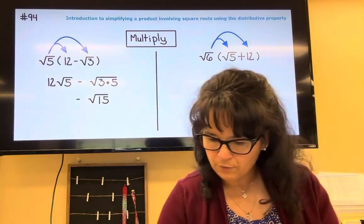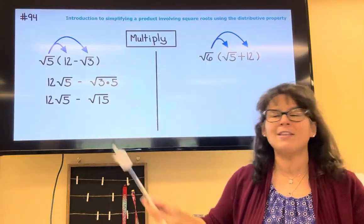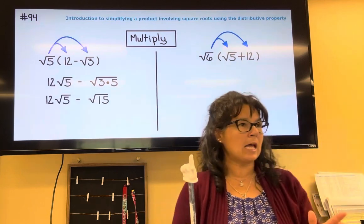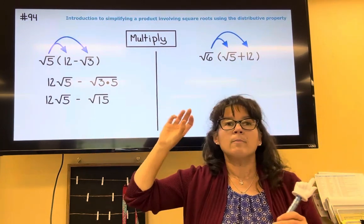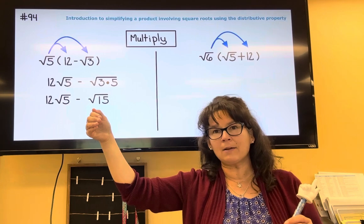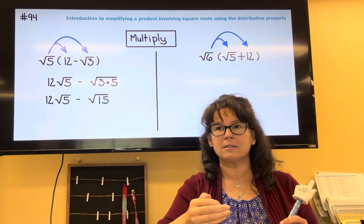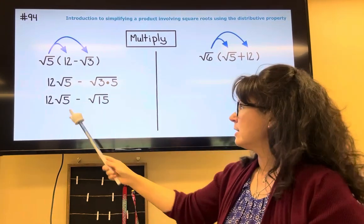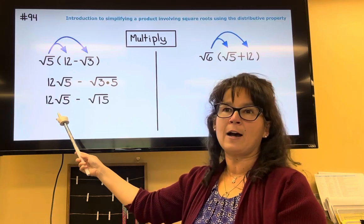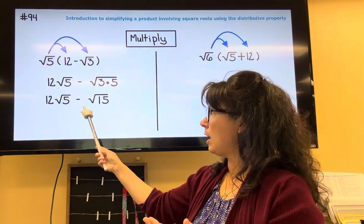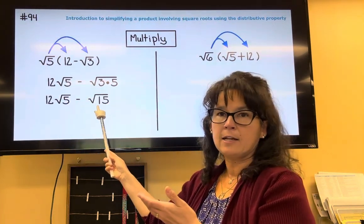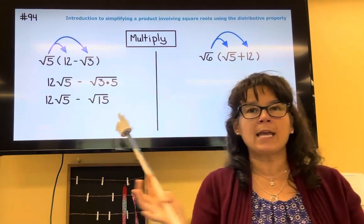I'm gonna bring down 12 roots of 5, and then that's all we can do. These are not like terms. Remember, the number in front tells you how many of something and what comes after it is the object. So this says 12 roots of 5 minus 1 root of 15. Since they're not the same, we can't combine them.